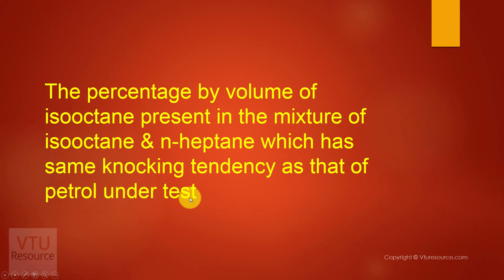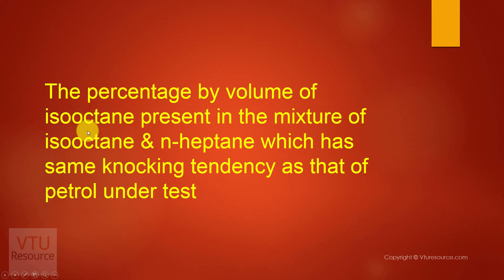What is isooctane and what is n-heptane? Isooctane is an ideal fuel — it is nothing but 2,2,4-trimethylpentane. When isooctane is used as a fuel in an IC engine (internal combustion engine), the knocking tendency was found to be very, very less. Therefore, the octane number of isooctane was arbitrarily fixed as 100.